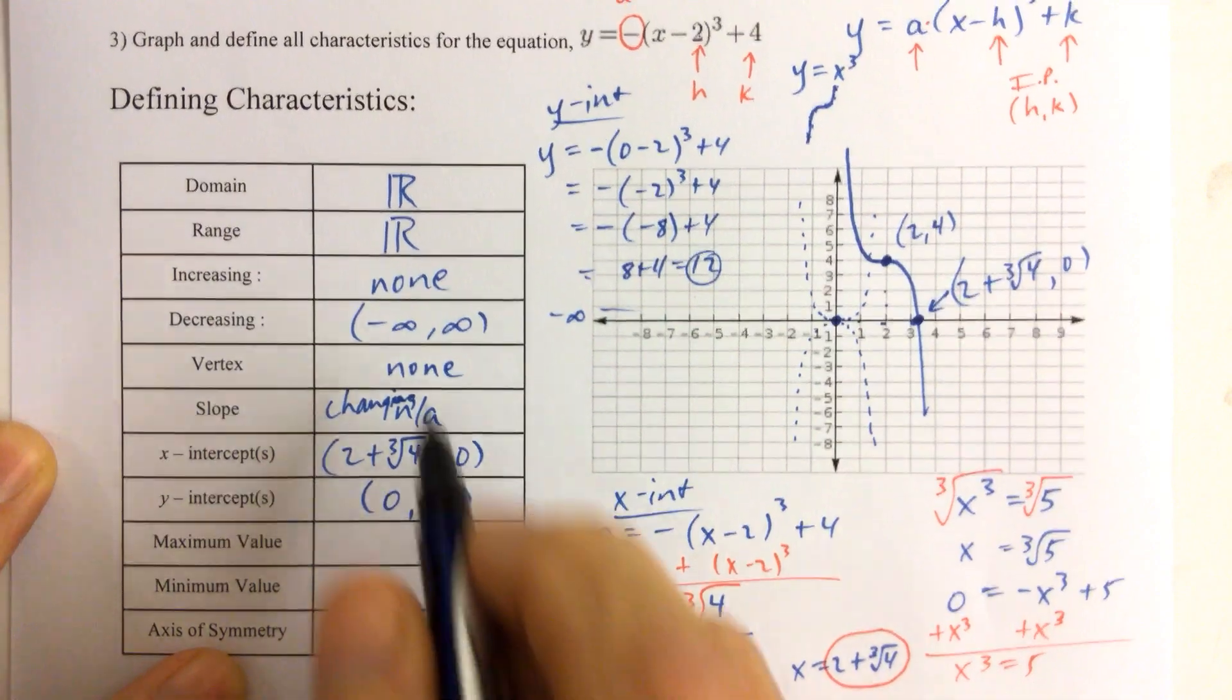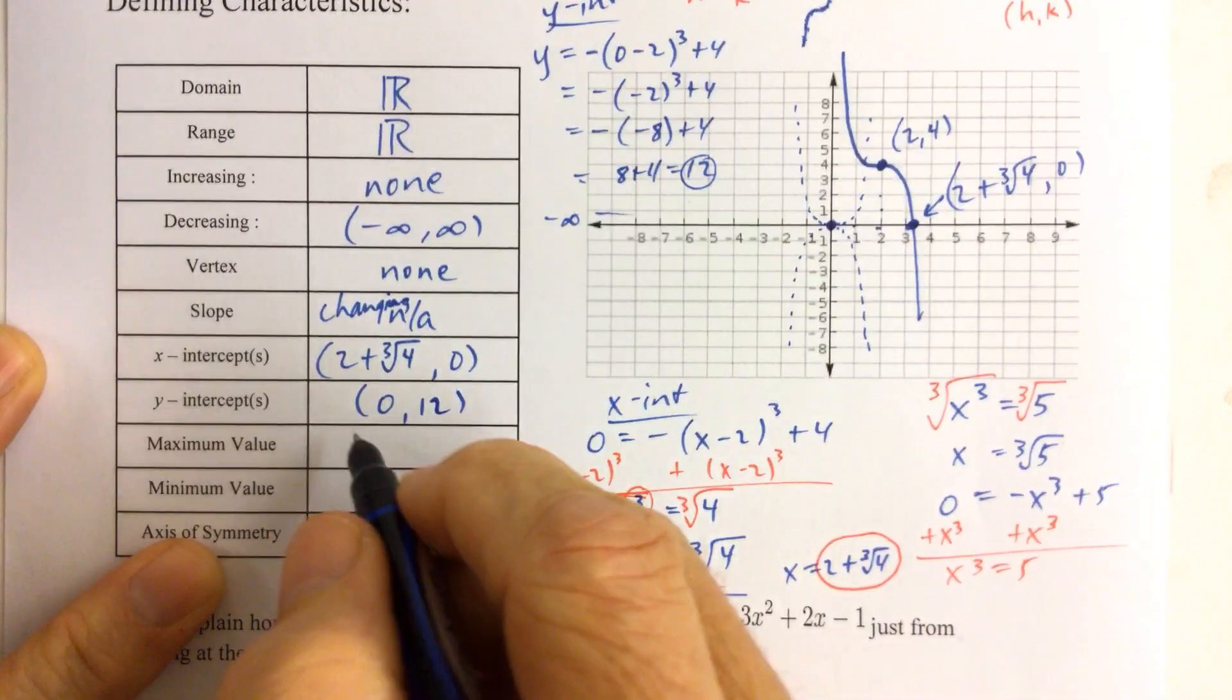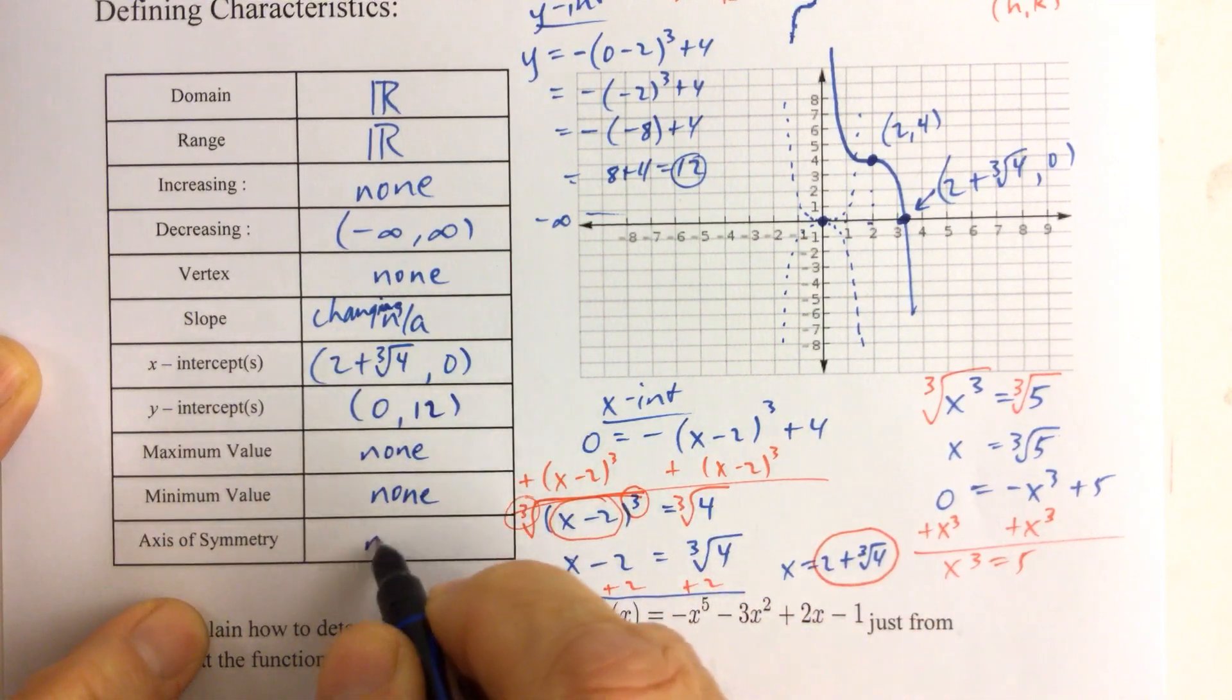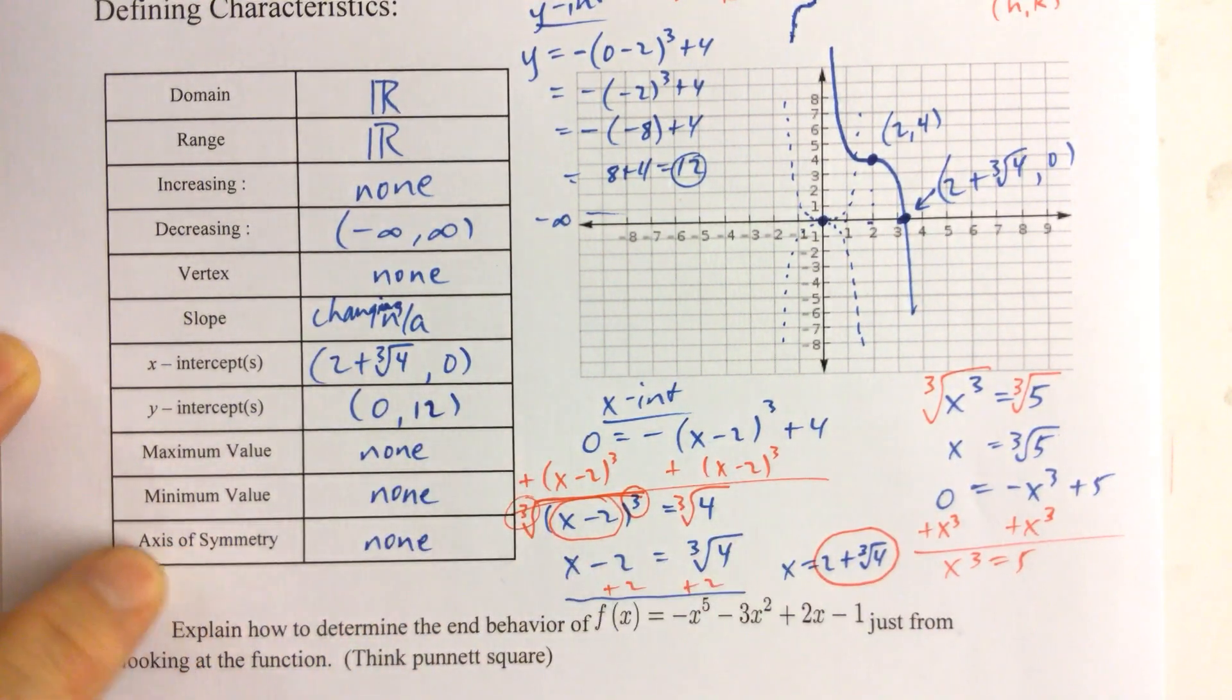Maximum and minimum values, if we have a range of all real numbers, then there's no way we can have a max, and there's no way we can have a min. And we don't have an axis of symmetry either.